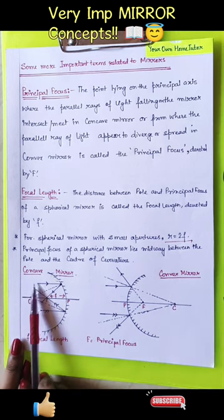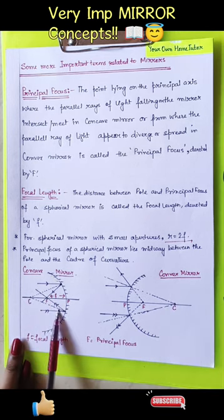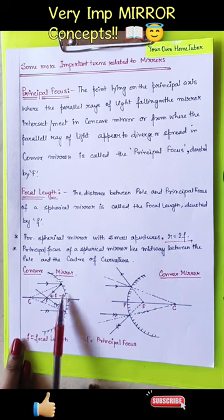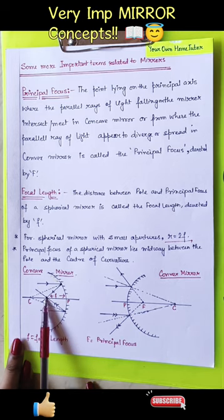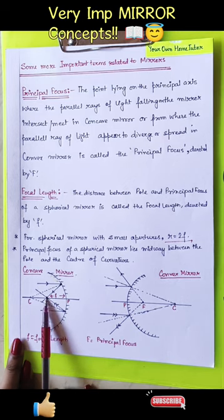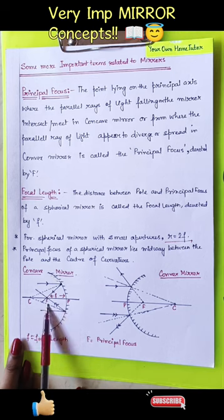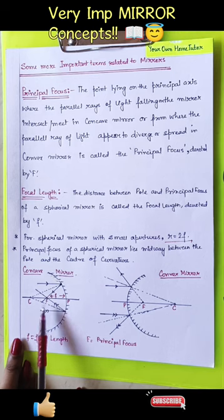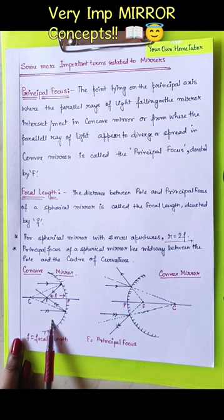In concave mirror, where the parallel rays of light are falling, then after reflection, they appear to converge or meet at a point. This point is known as the principal focus of concave mirror.